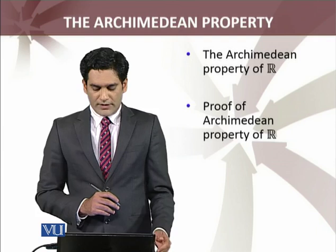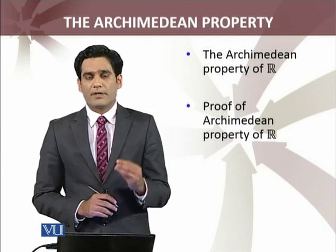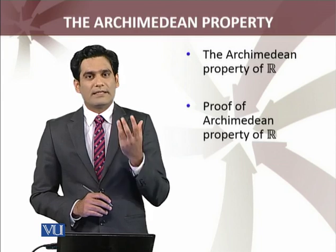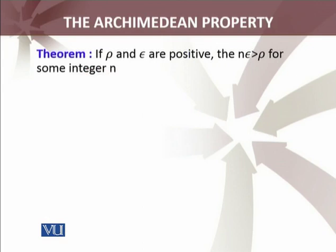So, we are going to discuss the Archimedean property of real numbers, and of course, the formal proof. Real analysis is about formally proving certain statements about the real numbers. The theorem states: if ρ and ε are positive numbers, then n·ε — which is n times ε — n times हम add कर रहे हैं real number ε को — satisfies n·ε greater than ρ. इसकी negation क्या होगी? The negation is: n·ε ≤ ρ for all n.